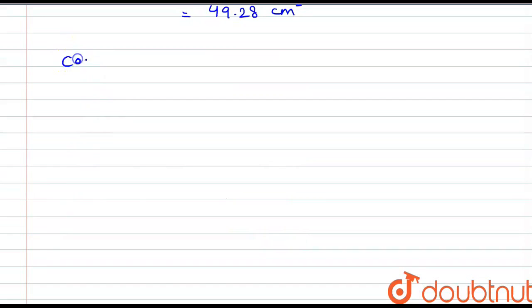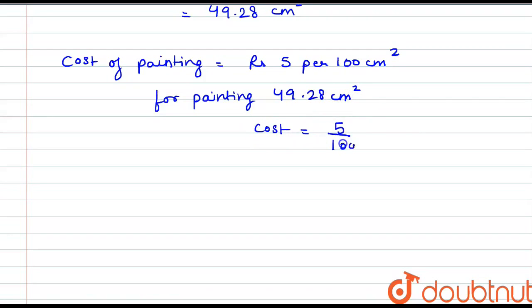Now it is given that the cost of painting is Rs. 5 per 100 cm². So for painting 49.28 cm², the cost would be 5 by 100 into 49.28. This comes out to be Rs. 2.464. So this is the total cost of painting, that is Rs. 2.464. Thank you.